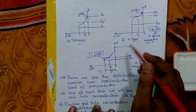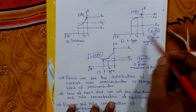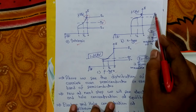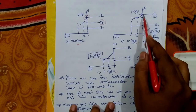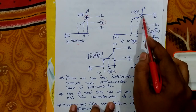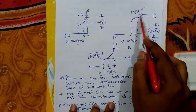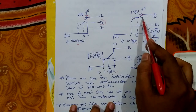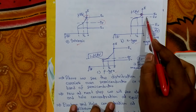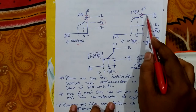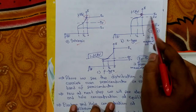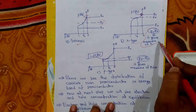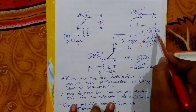For n-type semiconductors, the Fermi level is shifted toward EC — the edge of the conduction band — where we get the maximum number of electrons. As EF moves closer to EC, the number of electrons is greater. The quantity EC − EF gives us a measure of electron concentration.